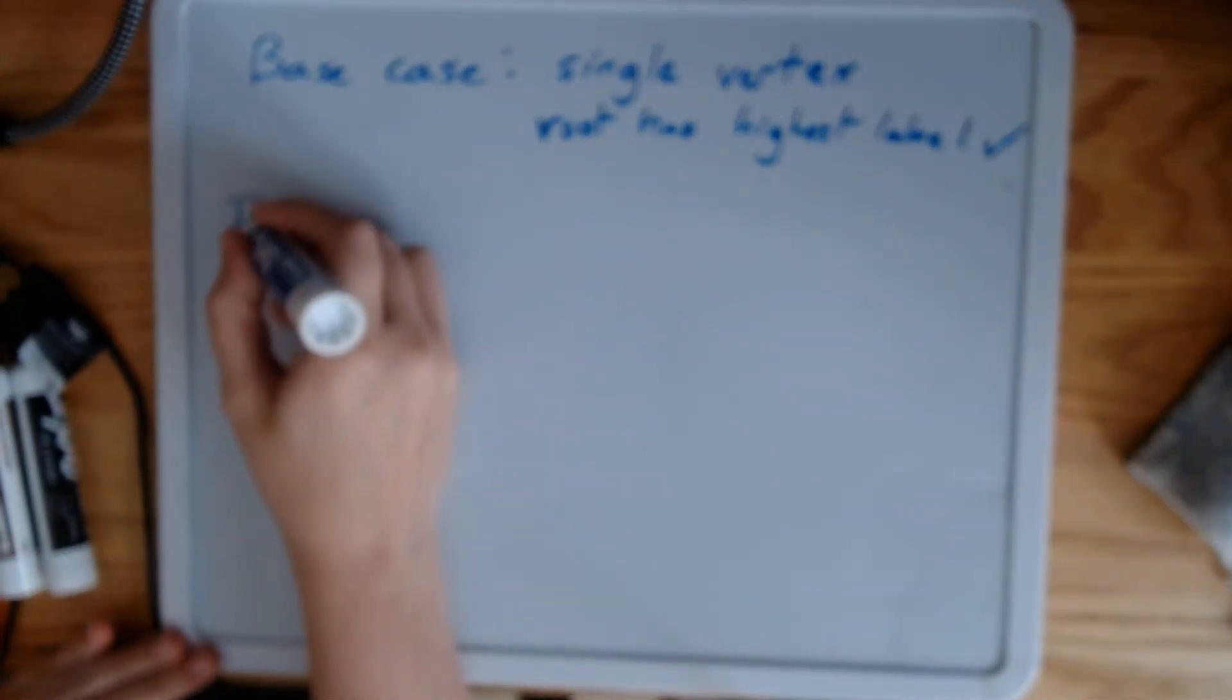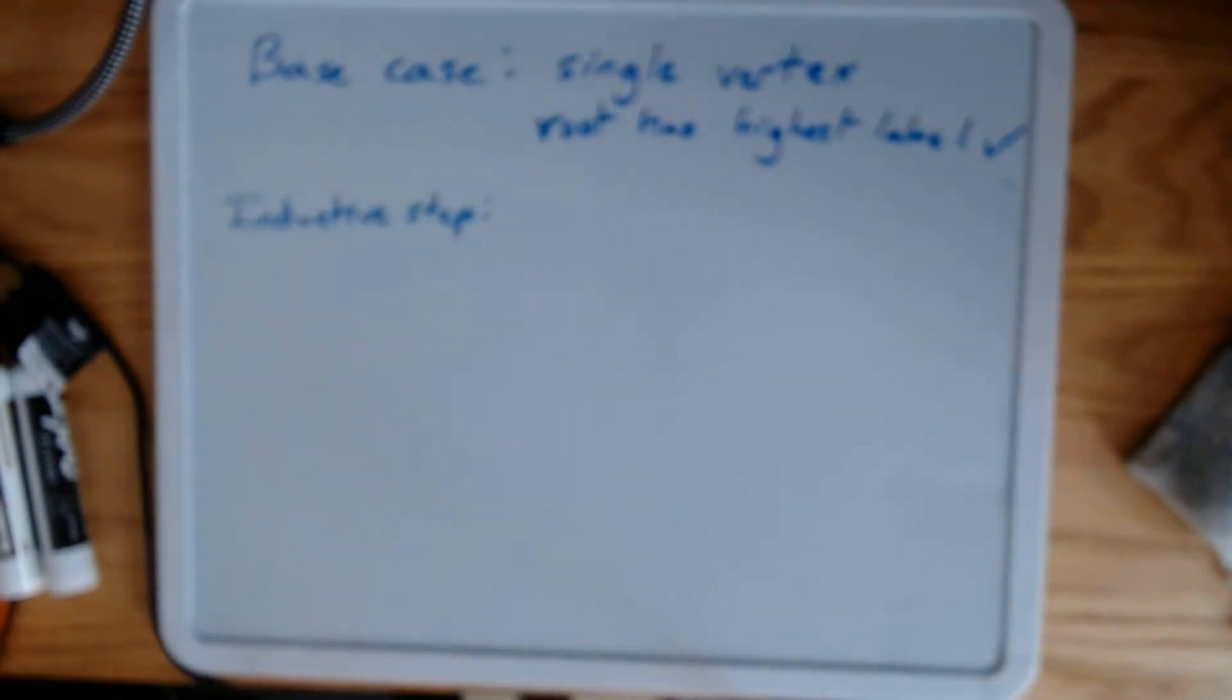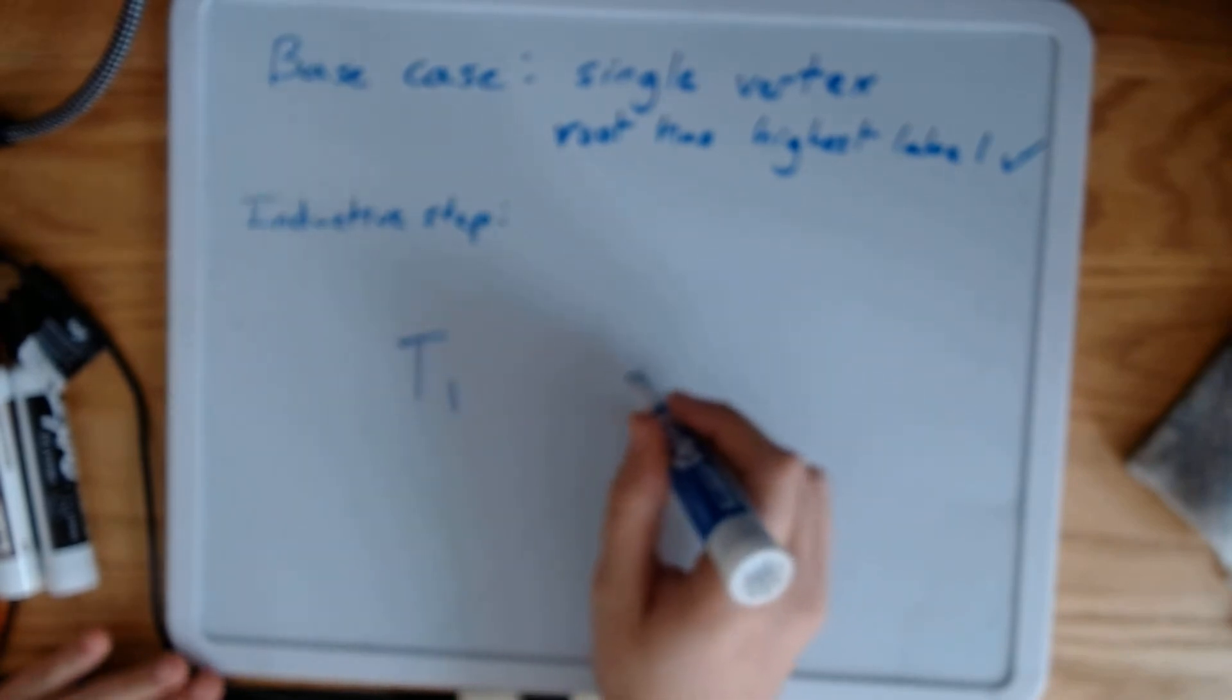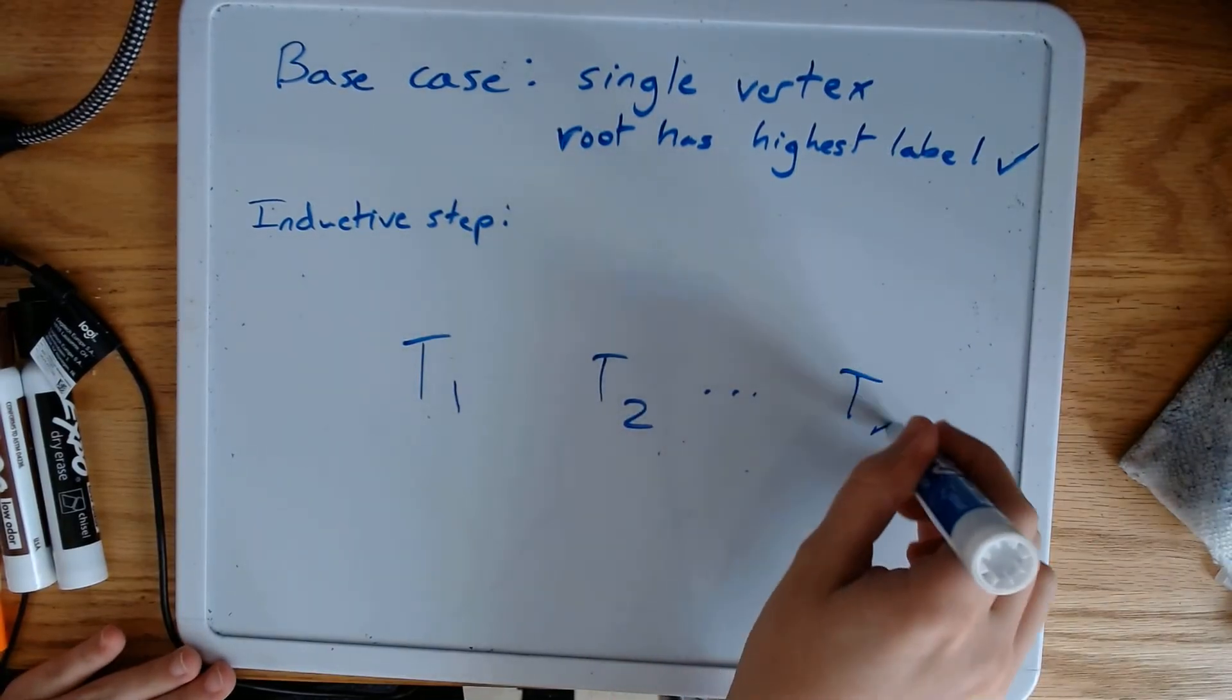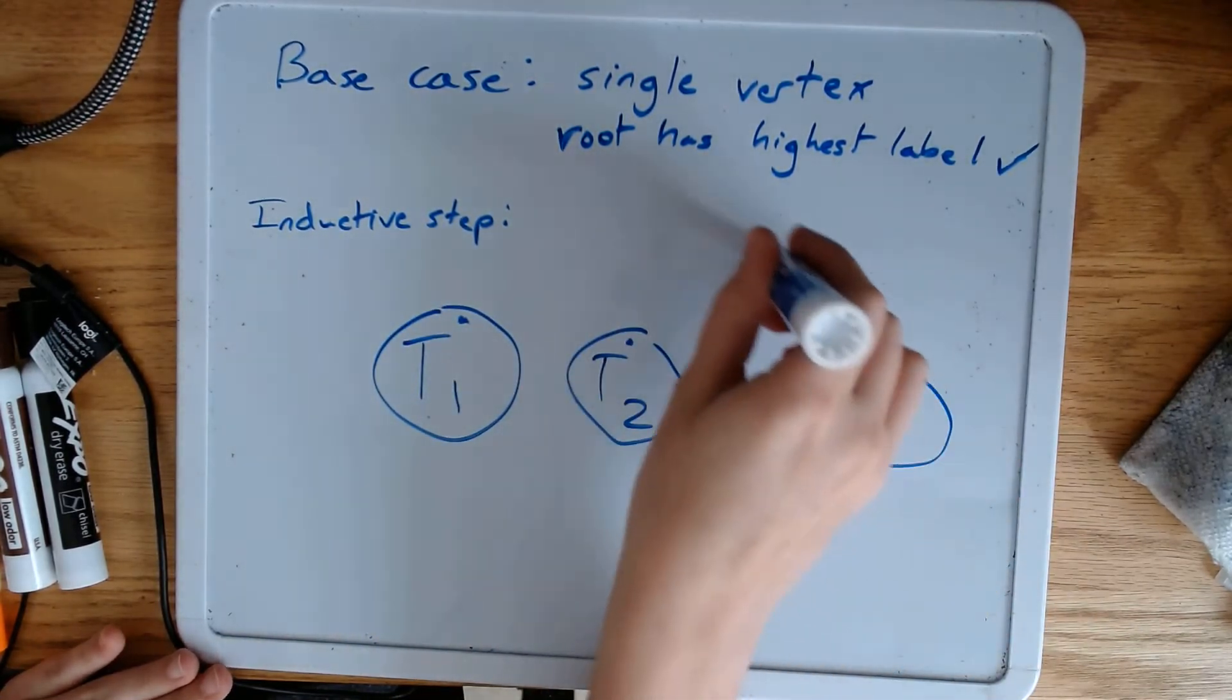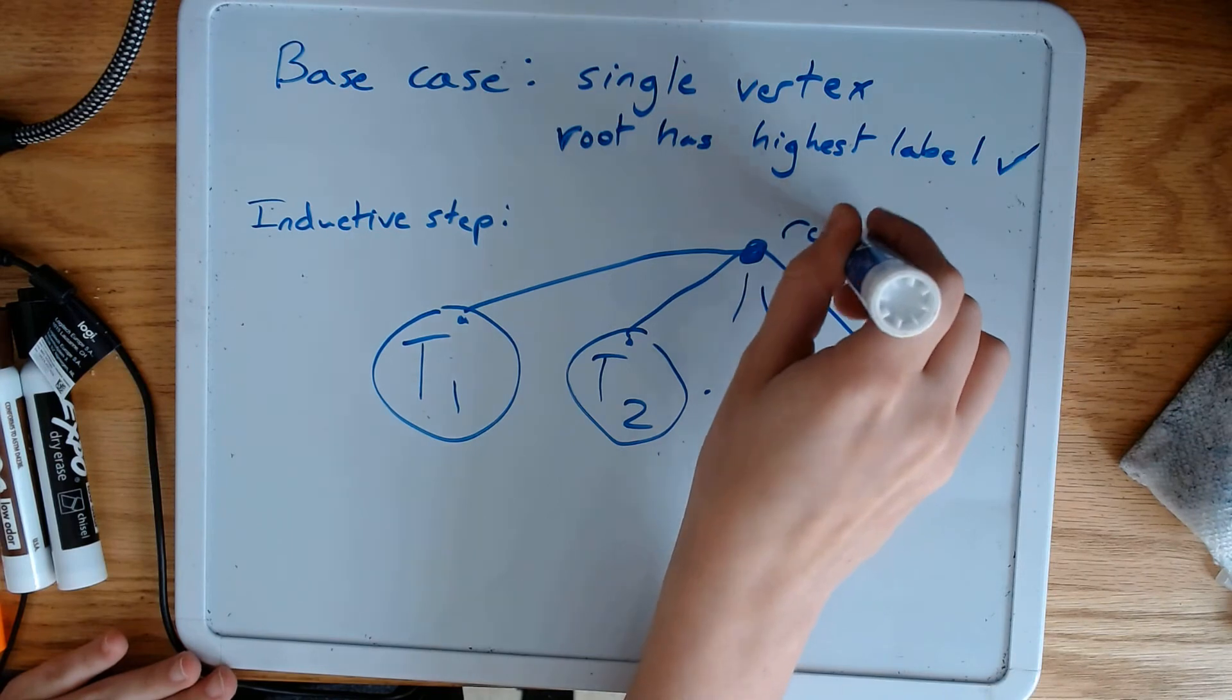What about the inductive step? So using our recursive definition for a rooted tree, we build a rooted tree by connecting several rooted trees to a new root vertex, right? We have some trees. They all have roots. We take their roots and connect them to our new root.